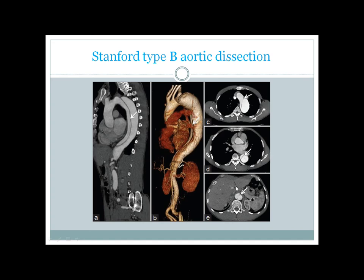Here is another image of an aortic dissection, but this one only involves the descending thoracic aorta — this is the Stanford type B aortic dissection. This is a bit less dangerous than Stanford type A because type A can actually cause aortic regurgitation and also cardiac tamponade. Stanford type B aortic dissection is less dangerous and many times can be managed medically.